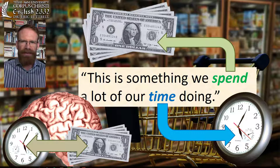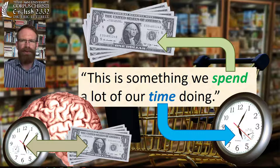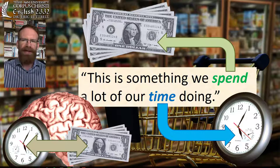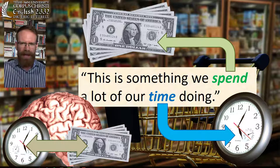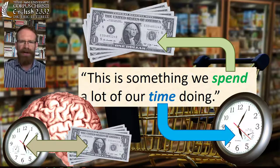We have a length of time in front of us and we think of ourselves as exchanging that length of time for whatever we produce during it. Time spent doing one thing is time that cannot be spent doing another — just as if you spend a dollar on one commodity, that same dollar cannot be spent on another.